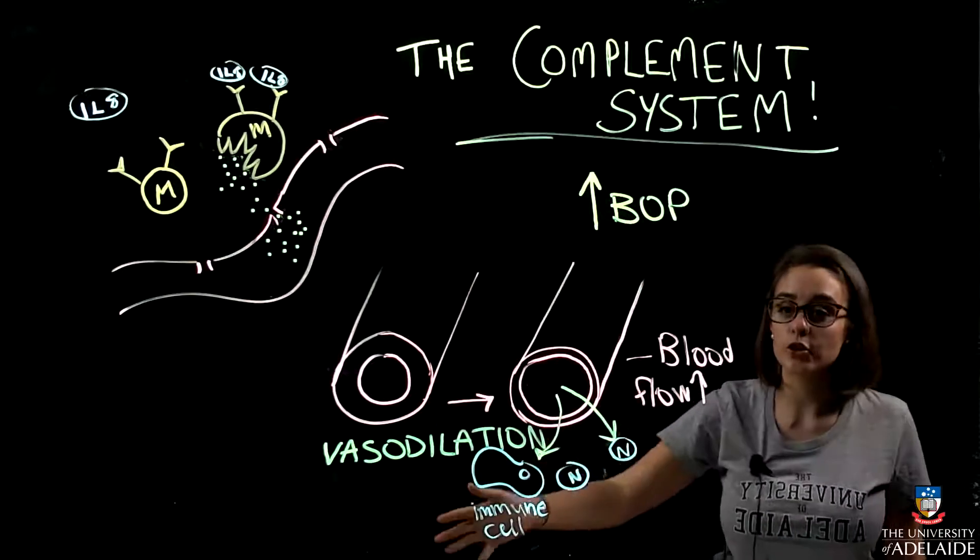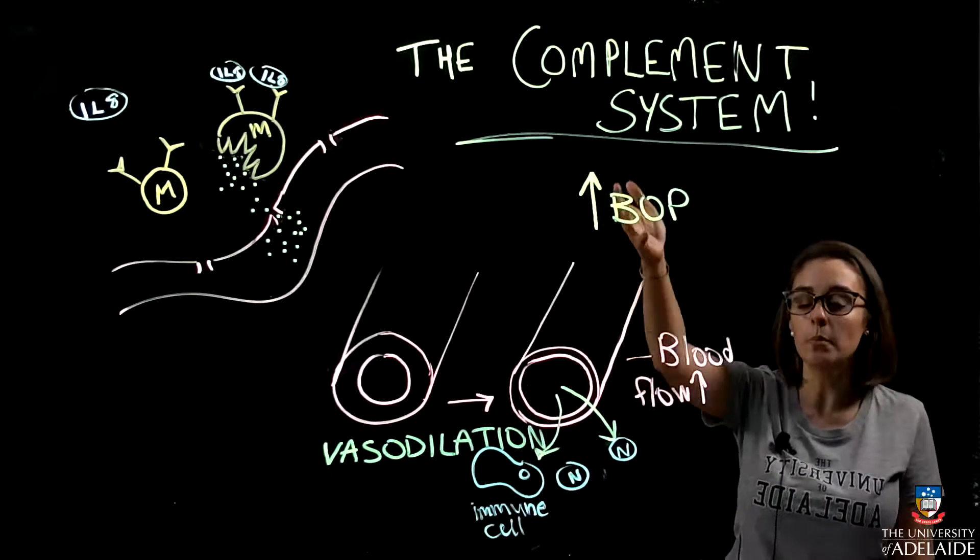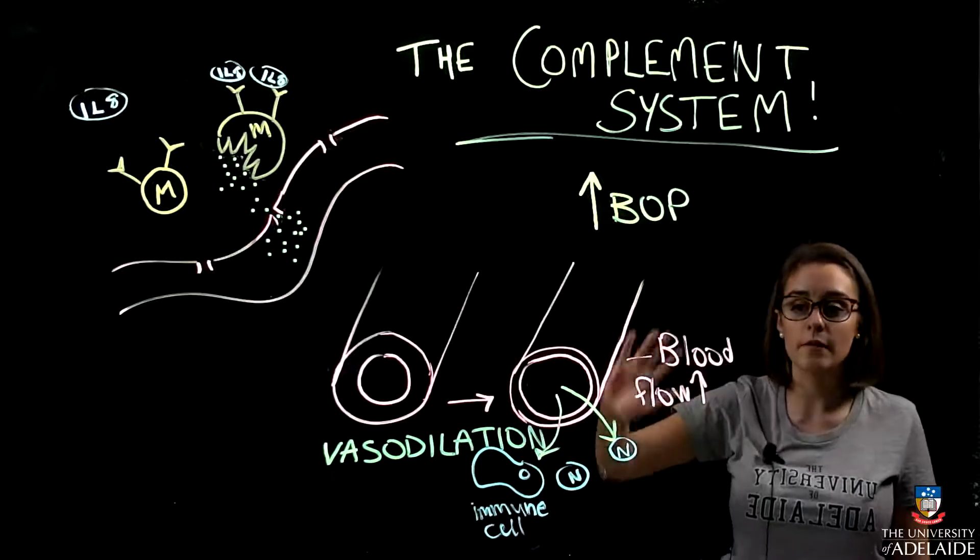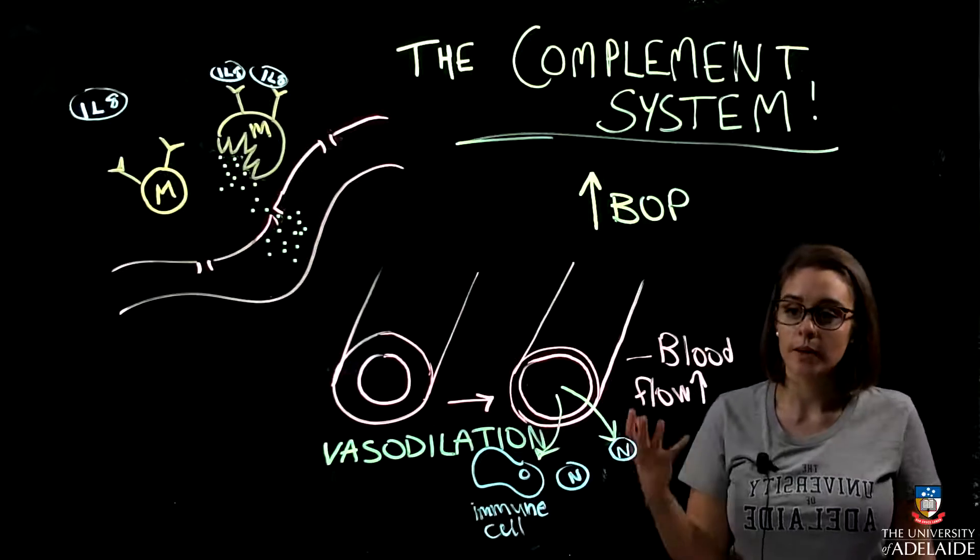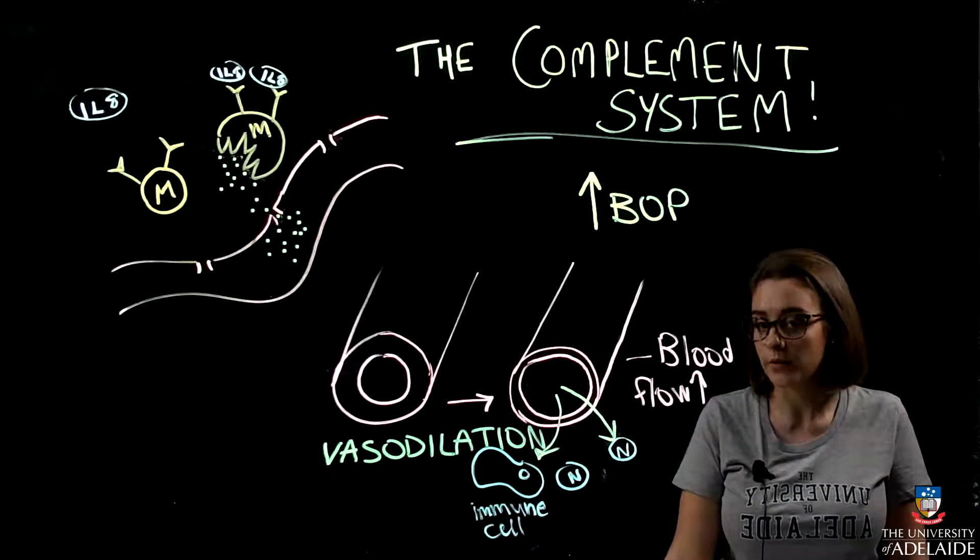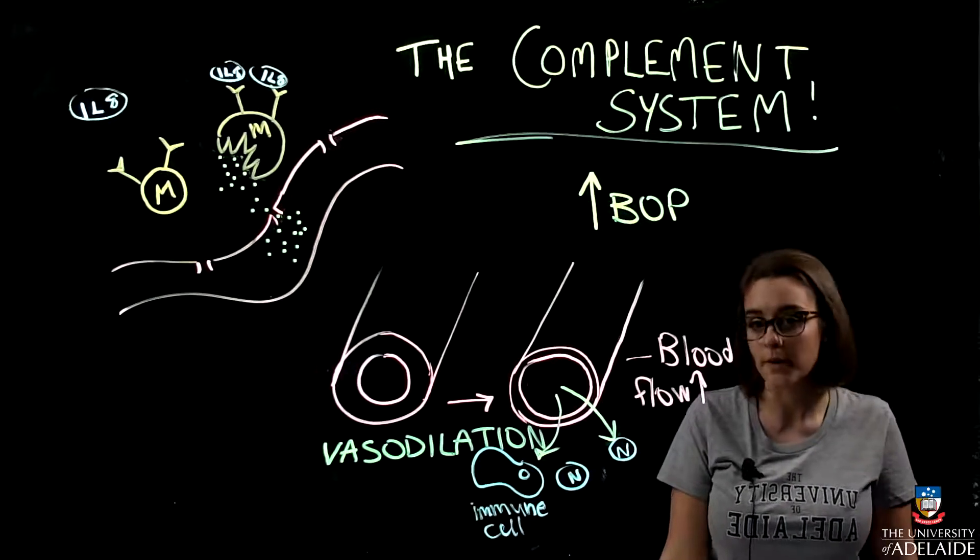This vascular reaction upregulates the complement system, and the complement system is there to help mediate everything, really increase its speed and efficiency, and then this brings in more macrophages and more immune cells to help break down the LPS invasion.